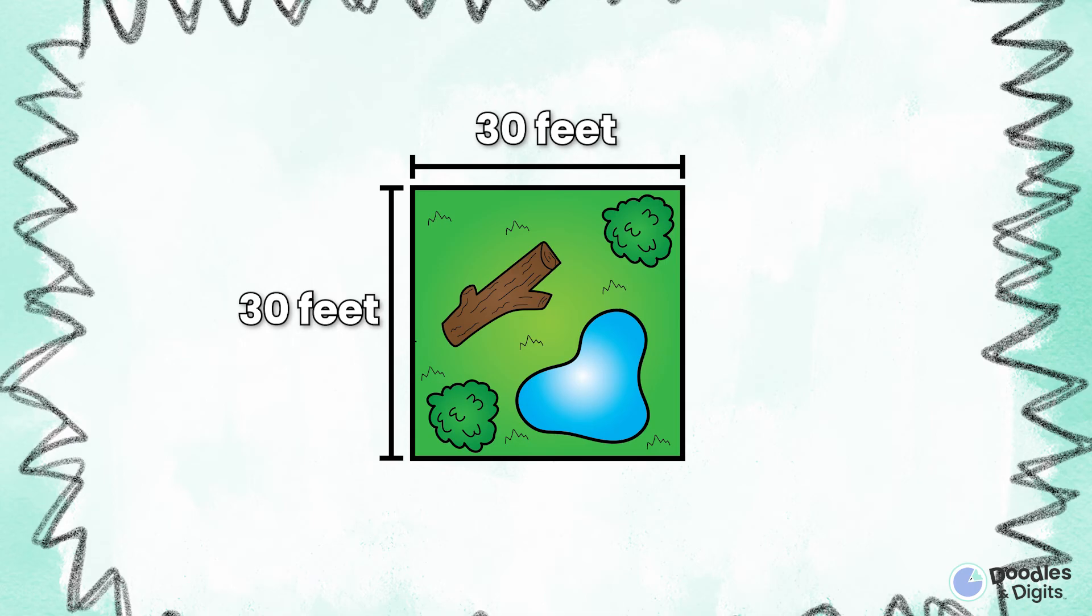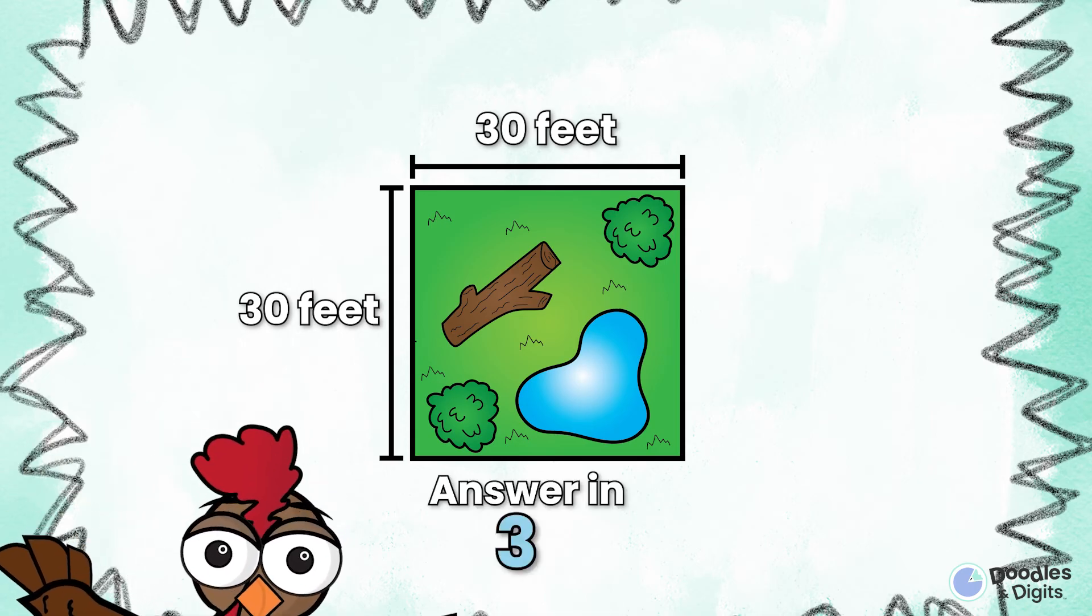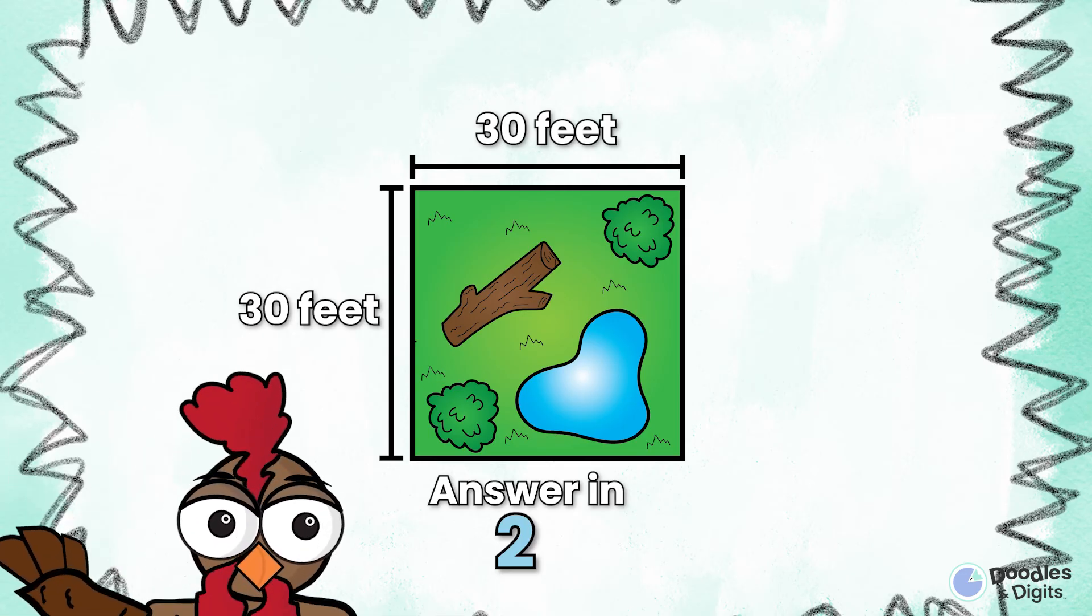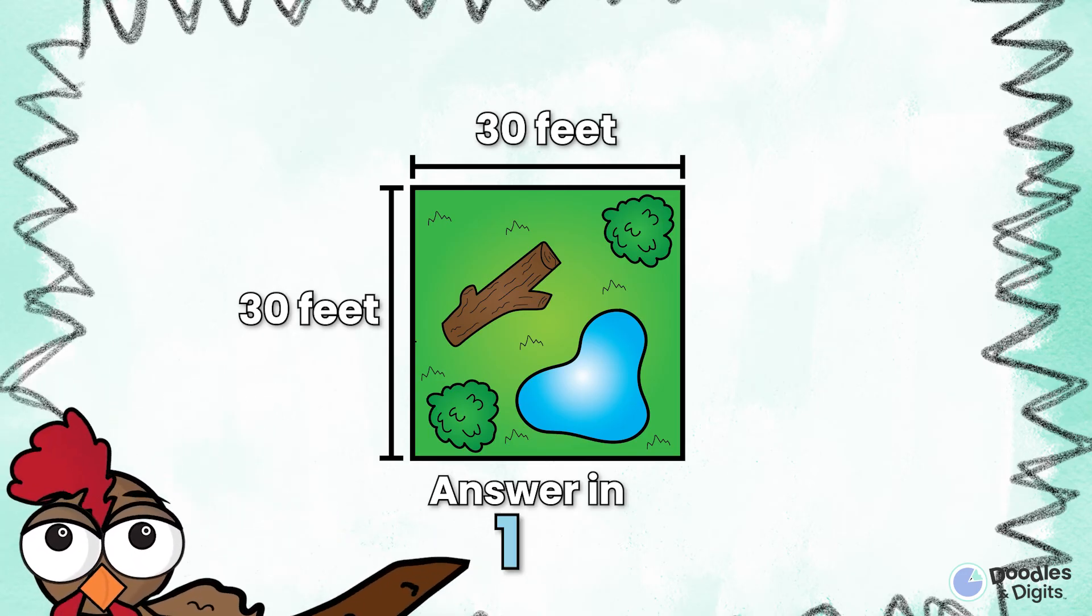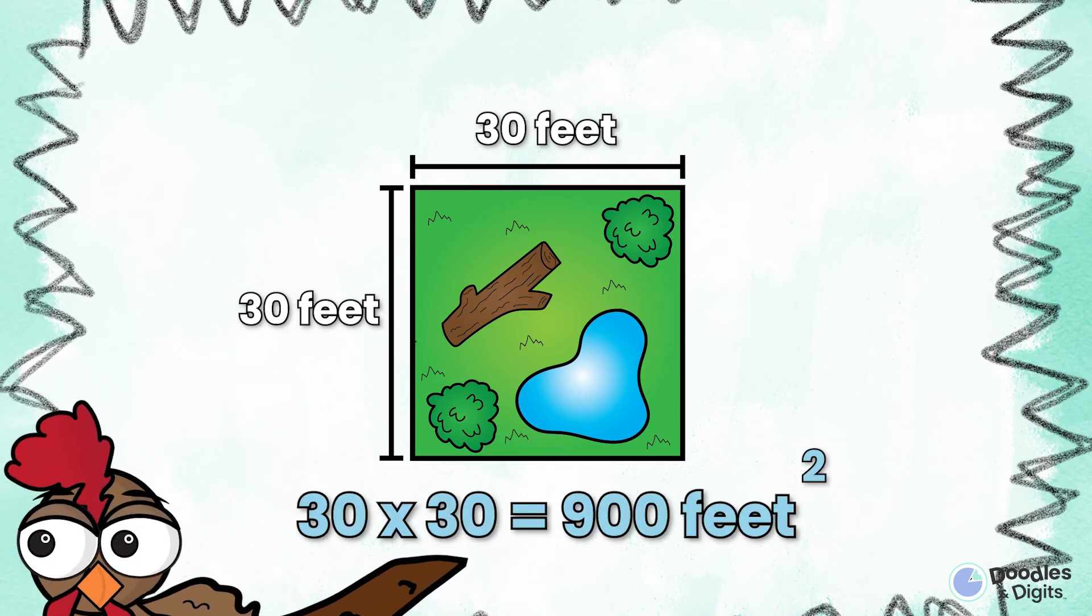Here's a zoo enclosure. 30 feet by 30 feet. 30 times 30 equals 900 feet squared.